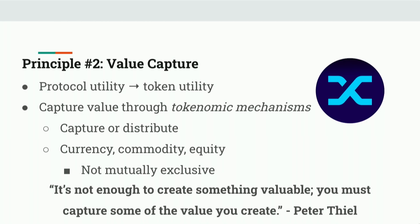Those asset classes are currencies, commodities, and equities. So your token could be currency-like, commodity-like, or equity-like — that's like a medium of exchange, a utility token, or a token that's paying dividends of some kind. They're not mutually exclusive. In fact, the best tokens have properties of all three of these asset classes and work similarly.